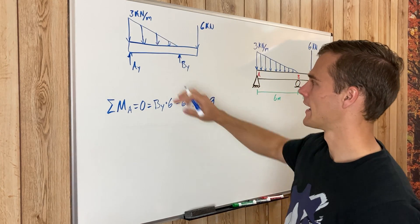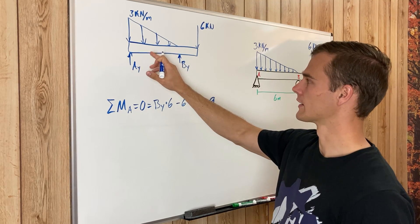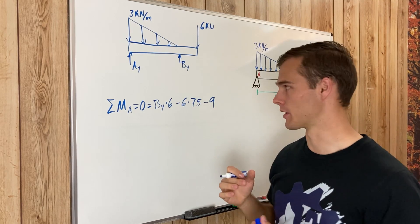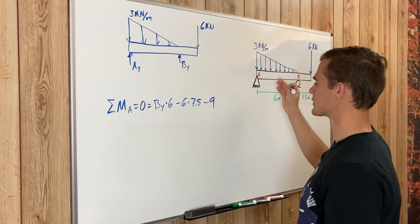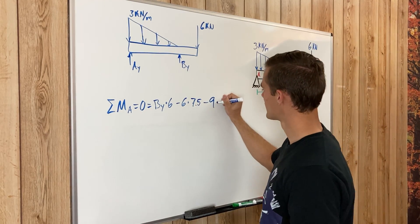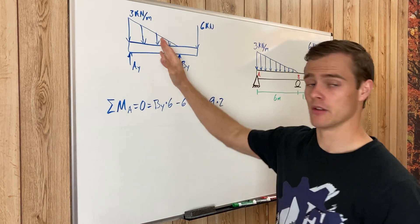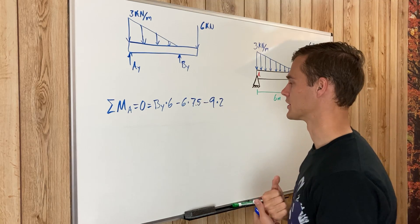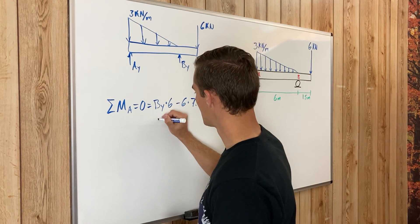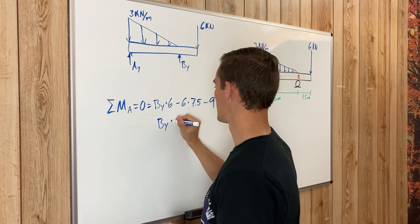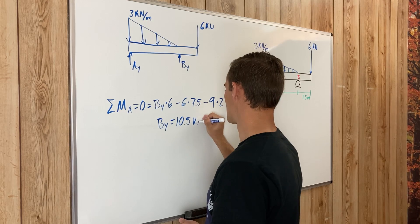The center of gravity of that triangular load is one-third along its length away from the 90-degree end, so one-third of the six-meter distributed load is two meters — we multiply by two. That's where the distributed load is effectively acting on the beam. Solving for B_y, we get B_y equals 10.5 kilonewtons.